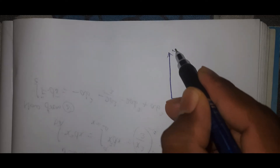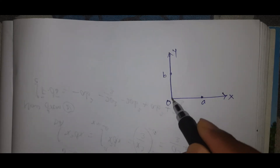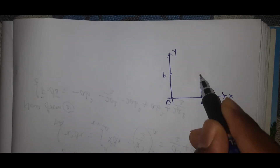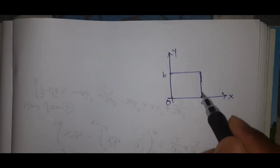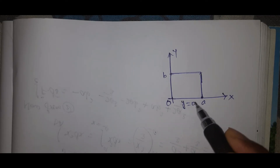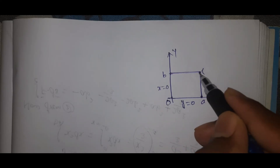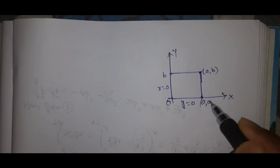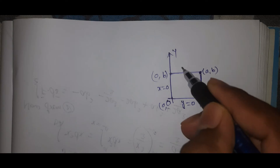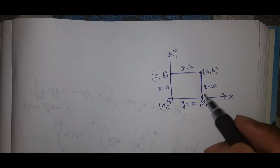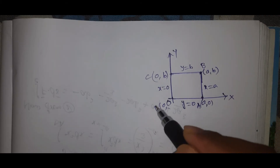Now for LHS: the rectangle has corners at O(0,0), A(a,0), B(a,b), C(0,b). The y-axis means x=0, the x-axis means y=0. The path goes along OA, AB, BC, and CO around the rectangle.